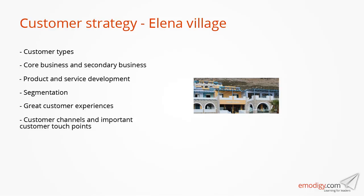Customer channels and important customer touch points: the hotel cannot control the service level at the travel agency, but they can control how user-friendly and sales-oriented their own internet site is, how sales and service behavior is when the customer calls, and how it is when the customer is at the hotel. The important customer touch points at the hotel are the employees at the reception, the bar, employees cleaning, and craftsmen entering. Their behavior and ability to be an integrated part of the customer's happy moments will be visible in satisfaction measurements and have a direct impact on the customer's choice of hotel in coming years. Sales and service mindset and behavior: once the owners and employees know the service level, they can discuss what kind of mindset and behavior is needed.